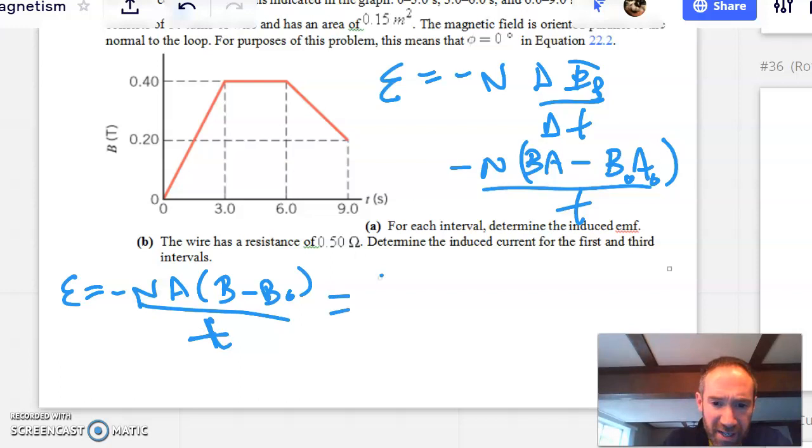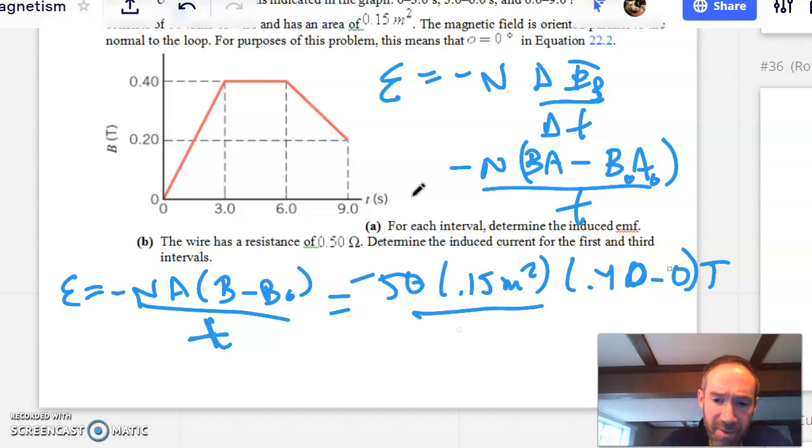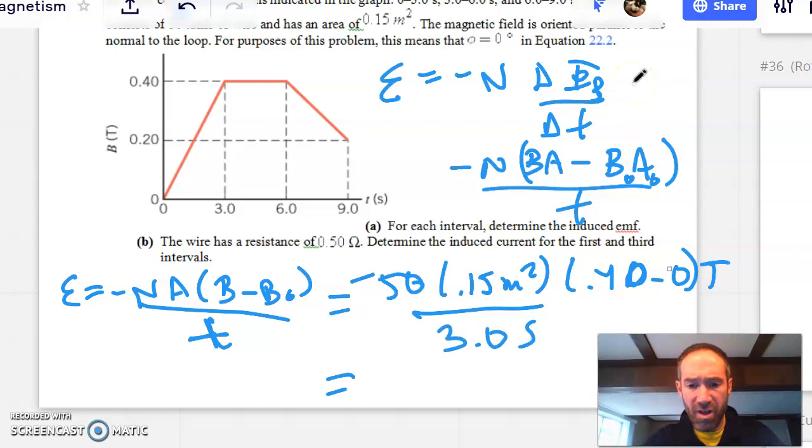So the number of turns is 50. The area is 0.15 square meters. The final minus the initial field is going to be 0.4 minus 0. And we're going to divide by the time of three seconds that that took. And when you run those numbers, you end up getting a value of negative one volt.